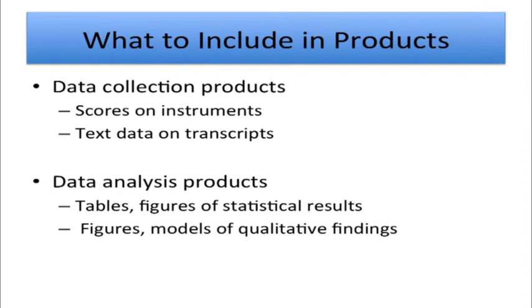You may also be asking what to put in the products. Products are the outputs at each phase of the research, often required by the federal government but also useful for graduate projects. Under quantitative data collection products, you'll have scores on instruments. Under qualitative data collection, you might have text data from transcripts, photographs, or videotapes. Under data analysis products, quantitative research often yields tables, figures, or graphs reporting statistical results, while qualitative research often produces figures, models, or diagrams of findings.